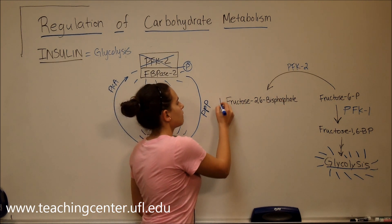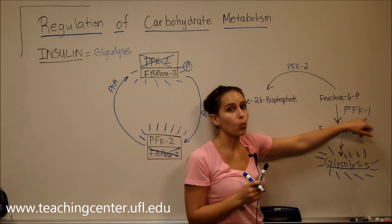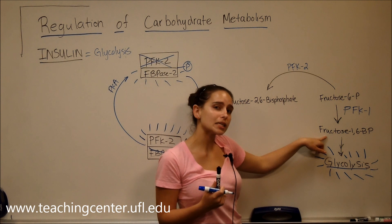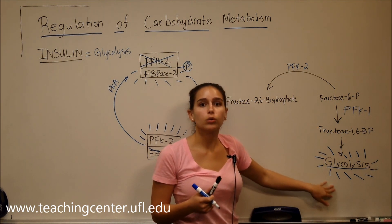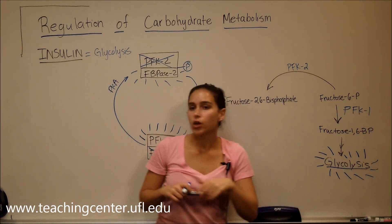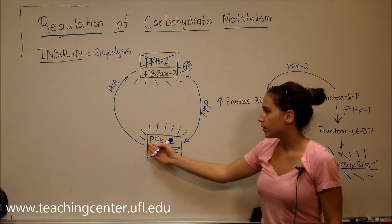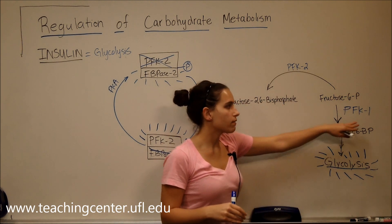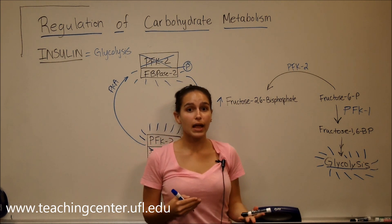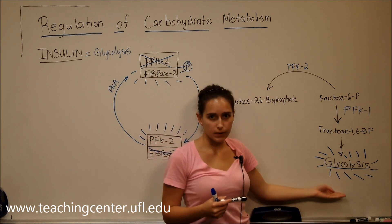Increased levels of fructose 2,6-bisphosphate allosterically bind to PFK1. PFK1 converts fructose 6-phosphate into fructose 1,6-bisphosphate, leading to the breakdown of glucose — in other words, glycolysis. So through insulin, we activate glycolysis by activating phosphofructokinase 2 and thereby phosphofructokinase 1. Remember, those two enzymes are different, catalyze different reactions, and work in different pathways: PFK2 is regulatory, and PFK1 is in glycolysis.